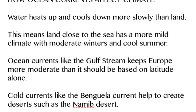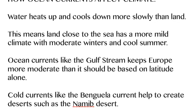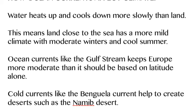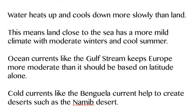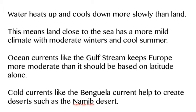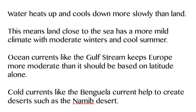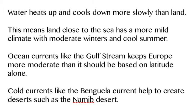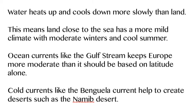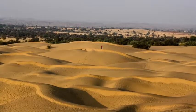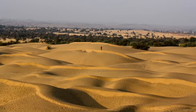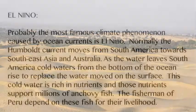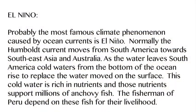As water heats up and cools down slower than land, land that's close to the sea tends to have a more moderate climate. Ocean currents like the Gulf Stream actually keep places like Europe warmer than they would otherwise be. Cold currents actually create deserts.